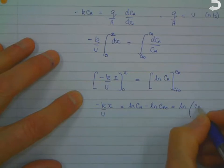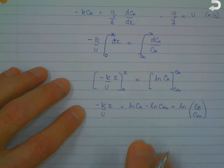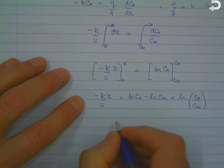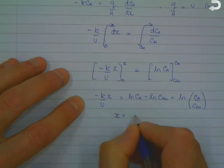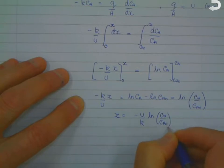And you can write that as x equals minus U over K times log CA over CA0. And you can get rid of the minus sign, just make that U over K, you get rid of the minus sign by...